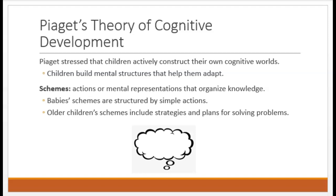Jean Piaget was a Swiss developmental psychologist. He was absolutely brilliant, and when he became a father, he became fascinated by his observations of his own children. While everyone else just shrugged their shoulders and thought, toddlers and their tantrums don't make any sense — who knows what they're thinking? Piaget set out to discover exactly that: what are children thinking, how does their thinking develop, and how do those changes occur?